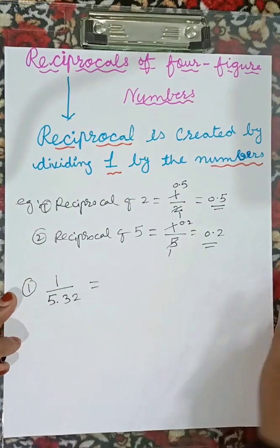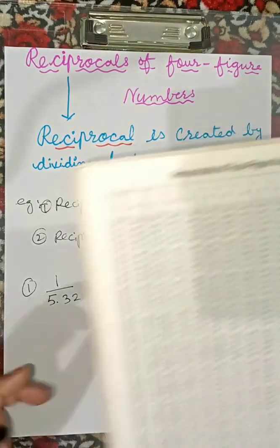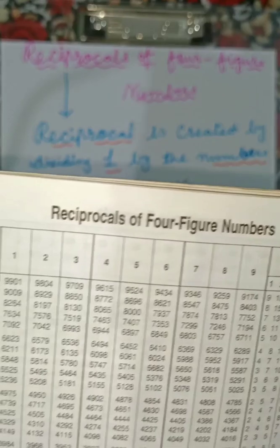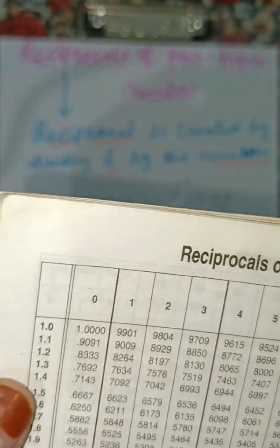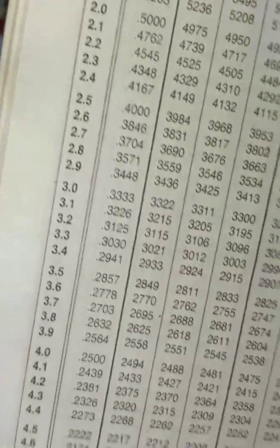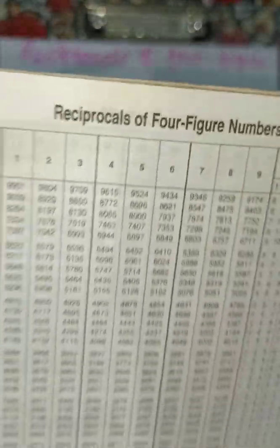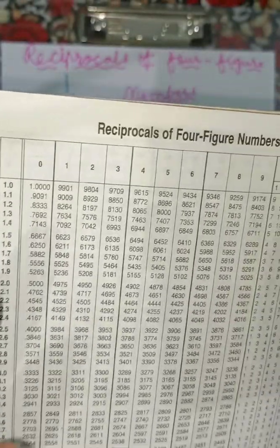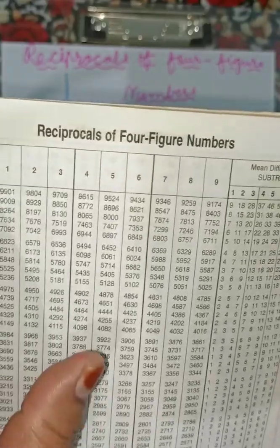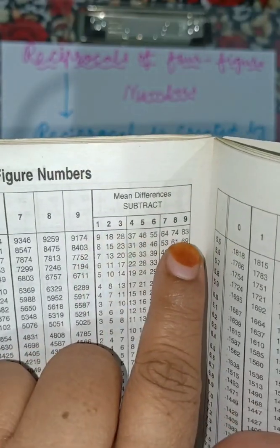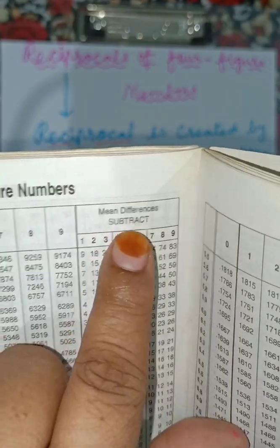We will use the log table. Here we use the table for four-figure numbers. This logarithmic book starts from 1.0 to 5.4 on one page, and from 5.5 to 9.9 on another page. The reciprocal table for four-figure numbers is divided into three columns: the main values, digits 0 to 9, and mean differences 1 to 9.